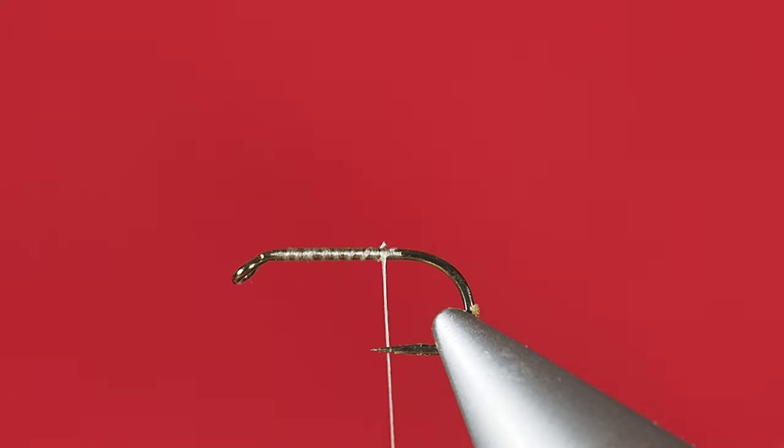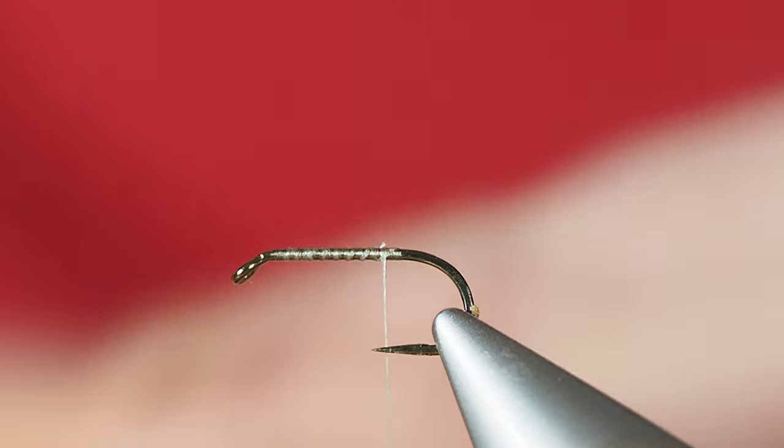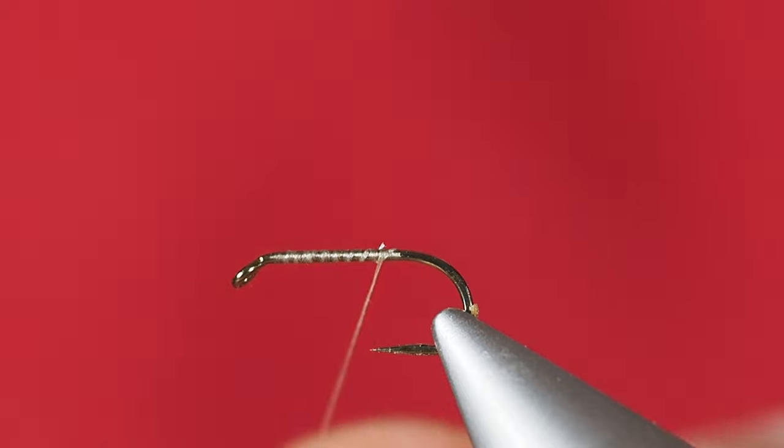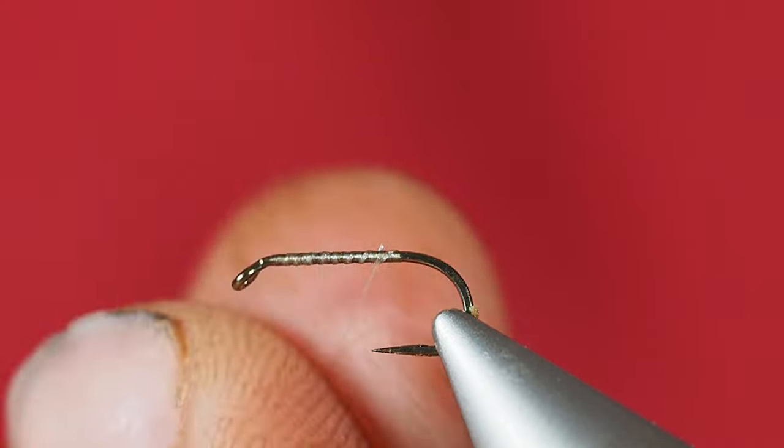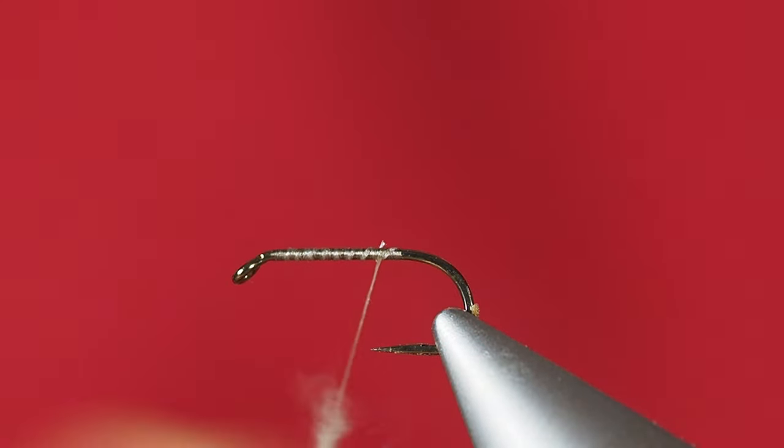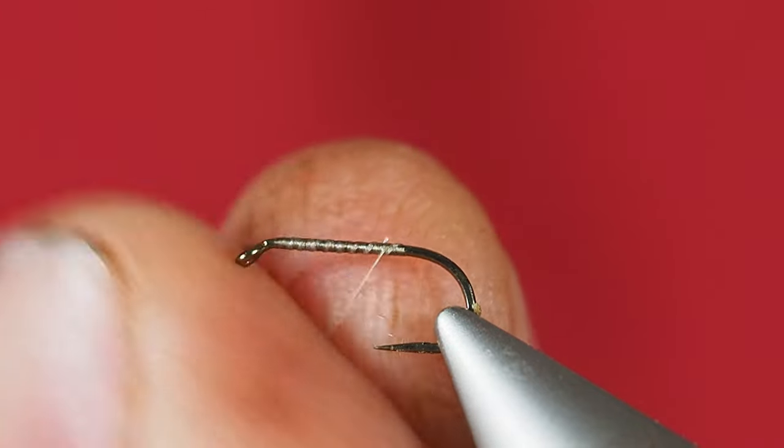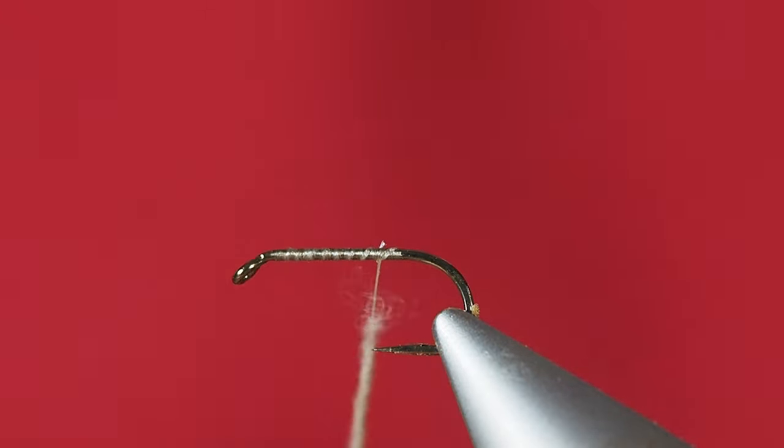We're going to start out with some super fine dubbing. I'm just going to grab myself a tiny little bit from my super fine dubbing dispenser there, and finger dub that right onto my thread. That's probably more than I'm going to need, so you may end up pulling some of it off.